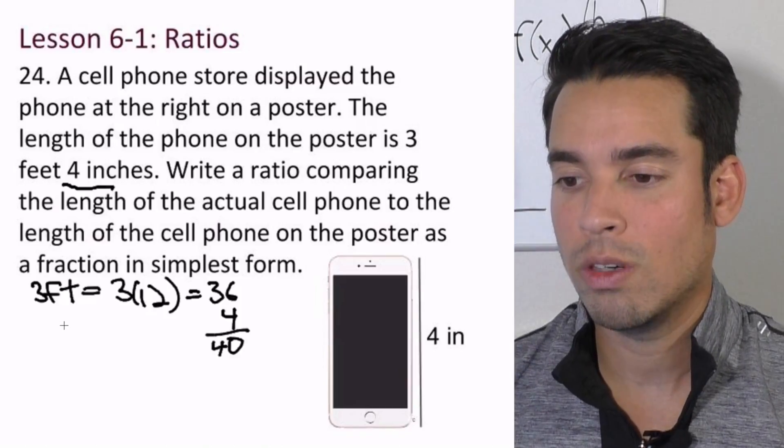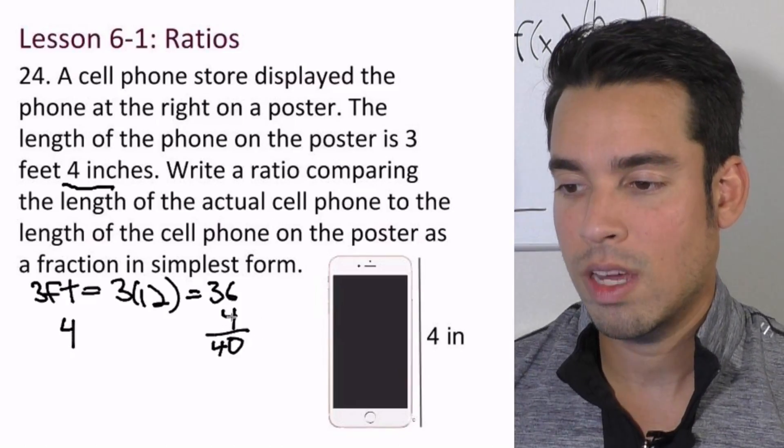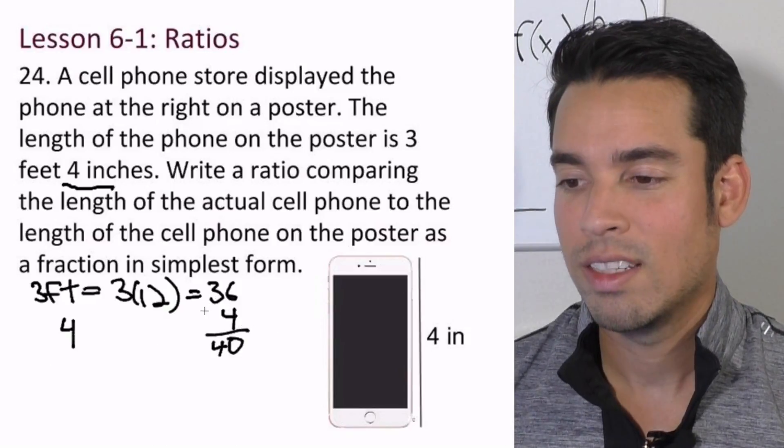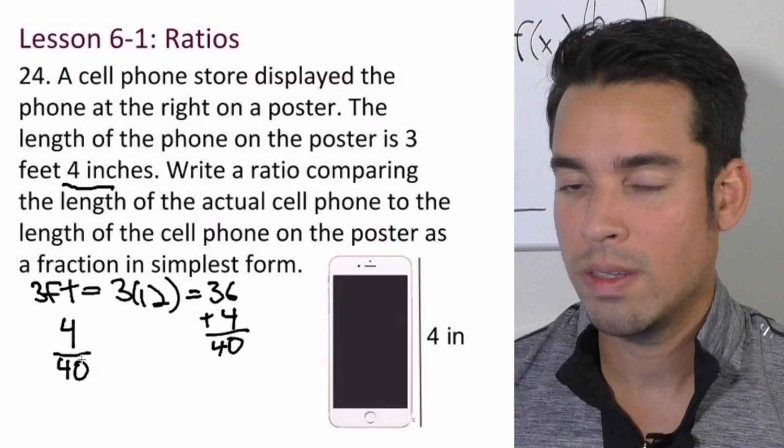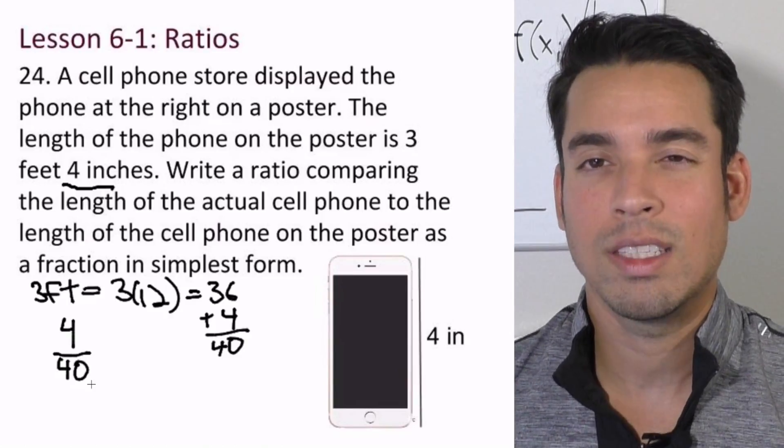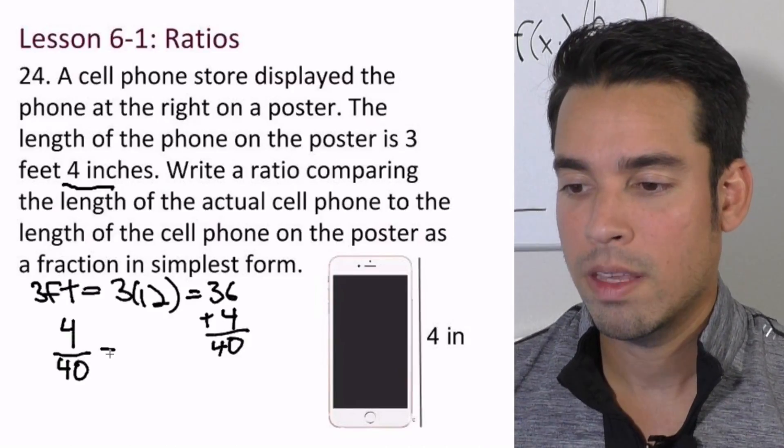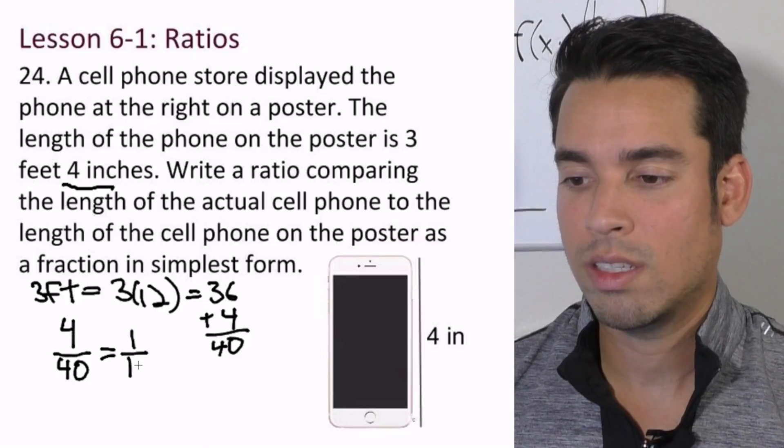So our ratio would be 4 over 40. And we reduce it by dividing the top and the bottom by 4, and we get 1 over 10. And done!